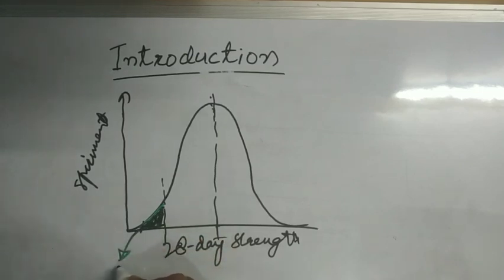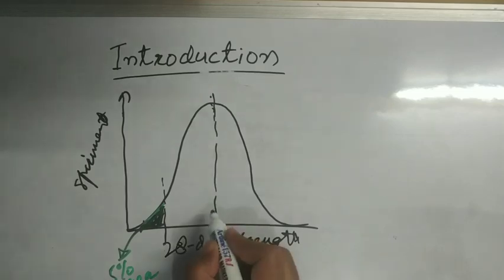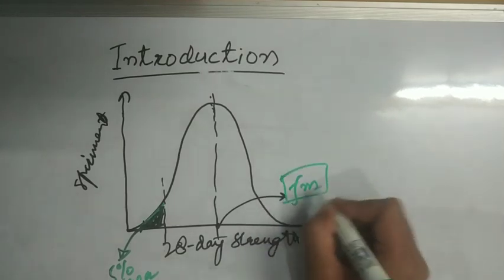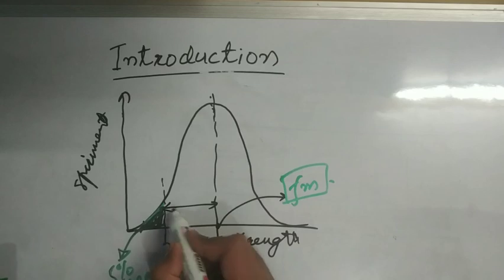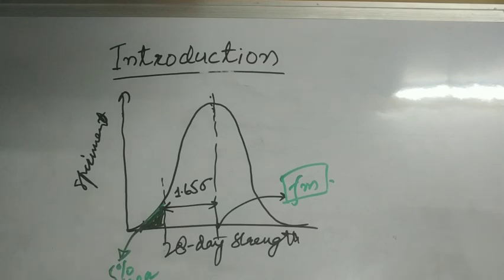This 5% area is shown by this shaded region. And if we talk about this strength at the peak, this is called as target mean strength, denoted by Fm. And this portion is equal to 1.65 times the standard deviation. So this is basically the normal distribution of concrete strength.